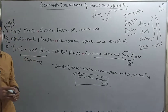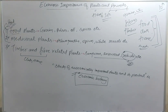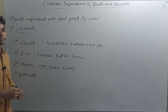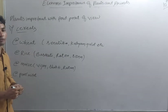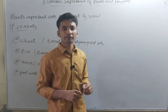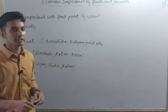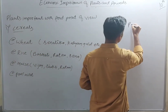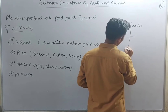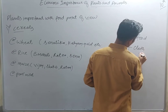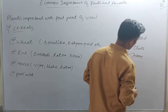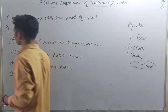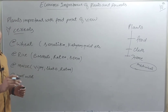We will then go through medicinal plants and timber and fiber plants. Let's start with the food plants and economic botany. The importance of plants from the food point of view: food, cloth, and home are the key categories, and then medicinal uses.